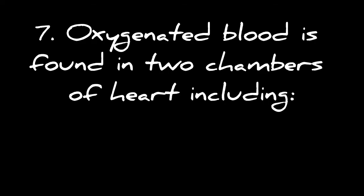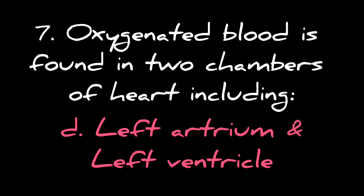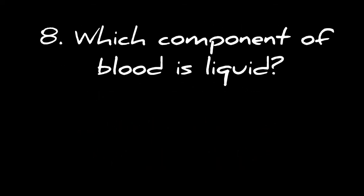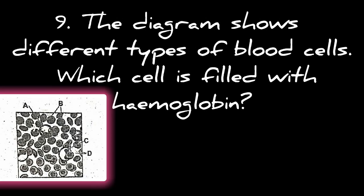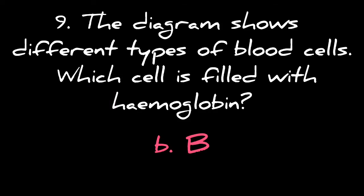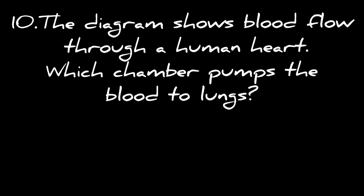Oxygenated blood is found in two chambers: the left atrium and left ventricle. The liquid component of blood is plasma. The diagram shows different types of blood cells — the cell filled with hemoglobin is the red blood cell. The diagram shows blood flow through a human heart; the chamber that pumps blood to the lungs is the right ventricle.